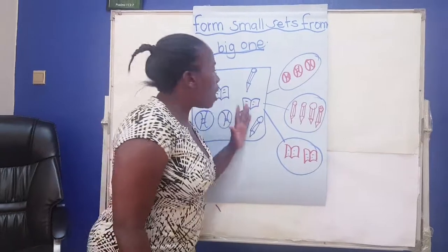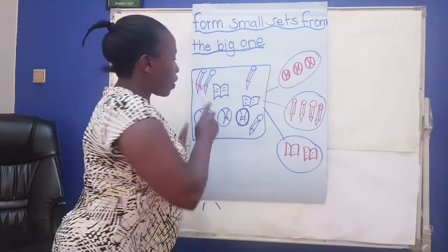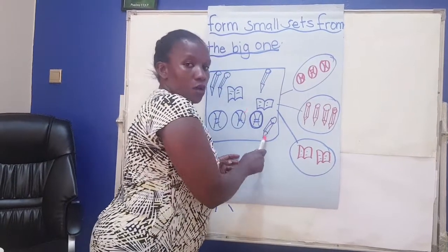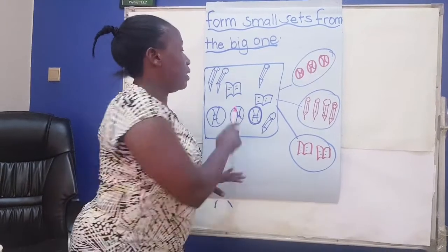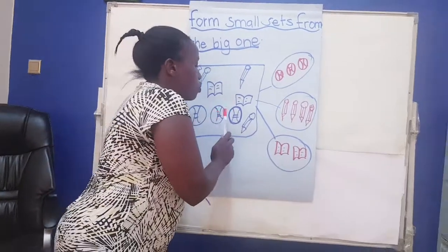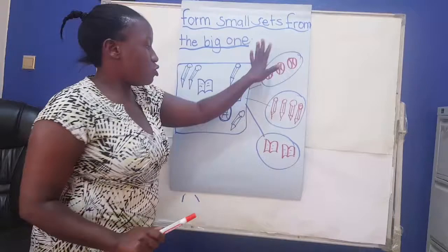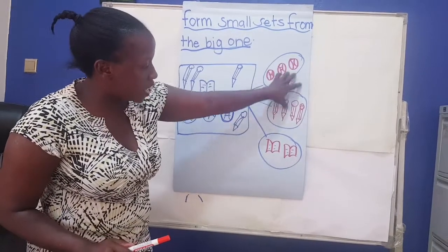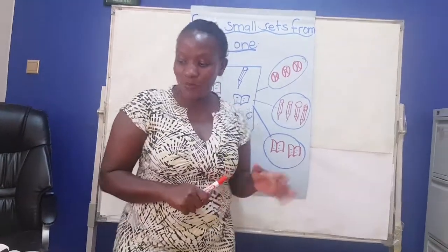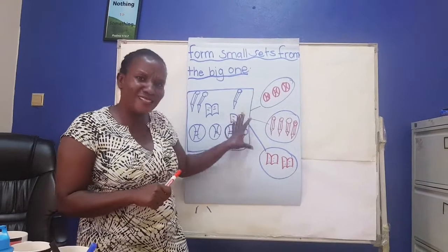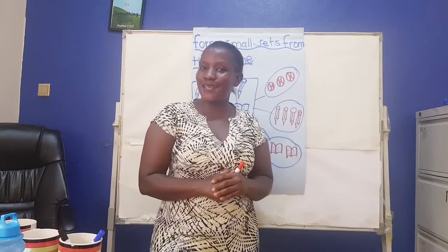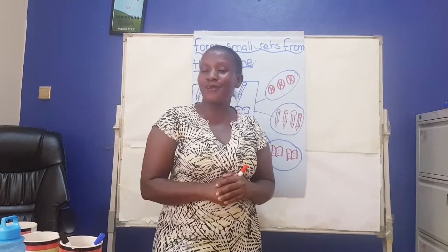Don't always forget: count the objects properly. One, two, three, four — don't forget this fourth pencil. Always remember to count properly. One, two — two books, you draw them in a set. One, two, three — balls, you draw them and make a small set. You see how we have made our small sets? I love you so much. Thank you for being with me. Always remember to be neat in your book, and don't forget to always keep a distance from your friend to avoid coronavirus. Thank you very much.